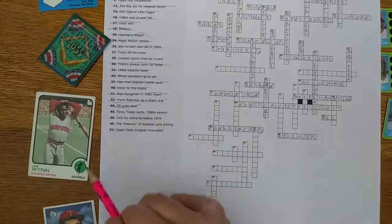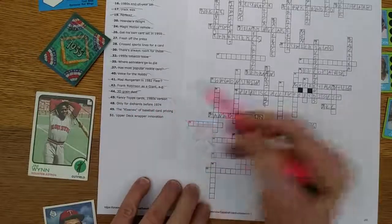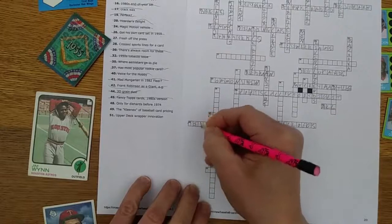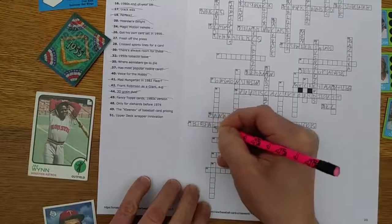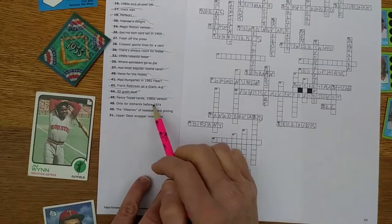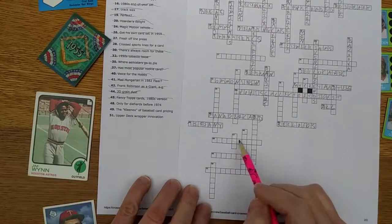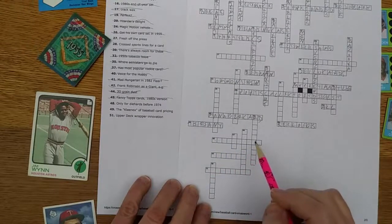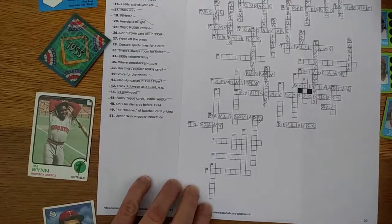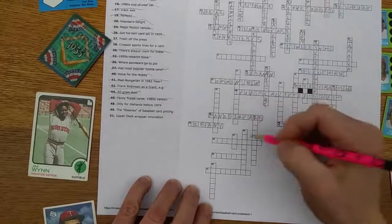Fancy Topps cards, 1980s version: Topps made high gloss, super premium, creamy cardstock - Tiffany cards. So confident in that one that I crossed it out before I even looked at the boxes. Only for diehards before 1974: Set building, S-E-T-B-U-I-L-D-I-N-G. Pretty sure that's right because we had all of these series. I'm going to leave that one because that's a little wide.